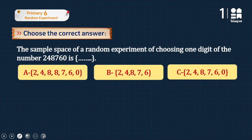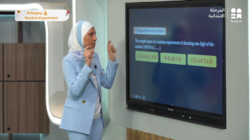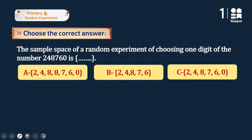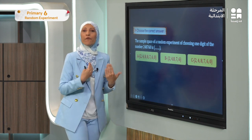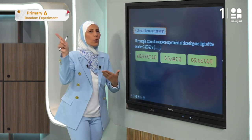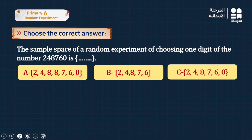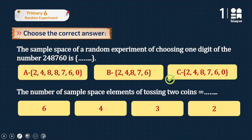Exercise: write the sample space of choosing one digit from the number 248760. The digits are 2, 4, 8, 7, 6, 0 — but we cannot repeat elements in a set. Option A repeats 8, so it's wrong. Option B has {2, 4, 8, 7, 6} — missing zero. Option C has {2, 4, 8, 7, 6, 0} — correct. The answer is C.